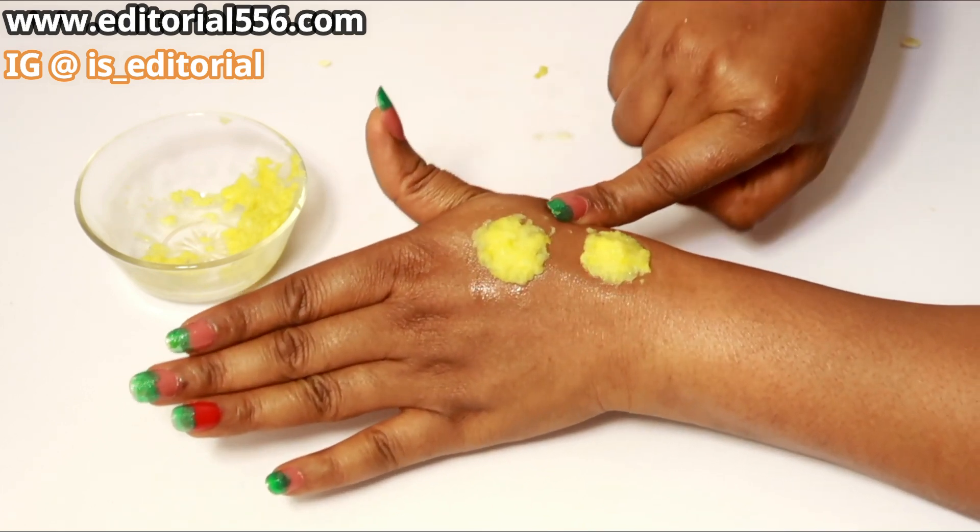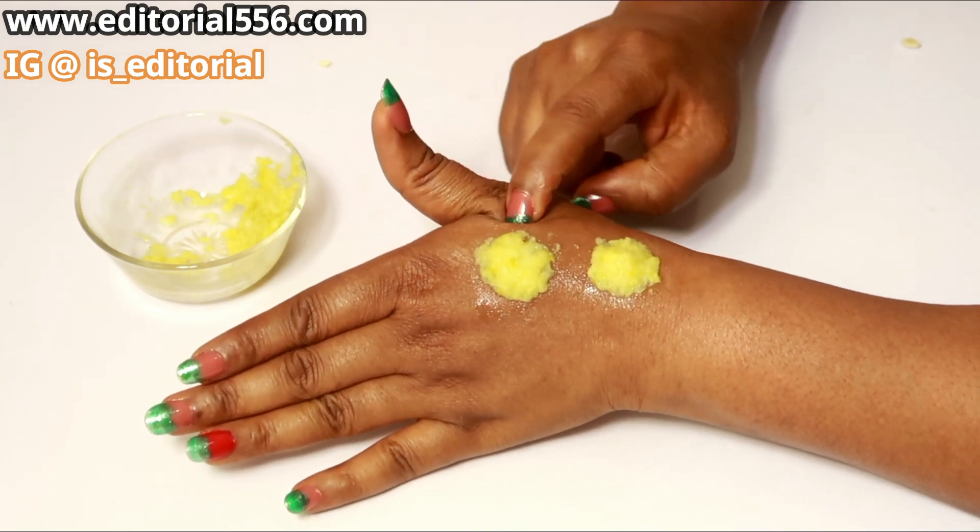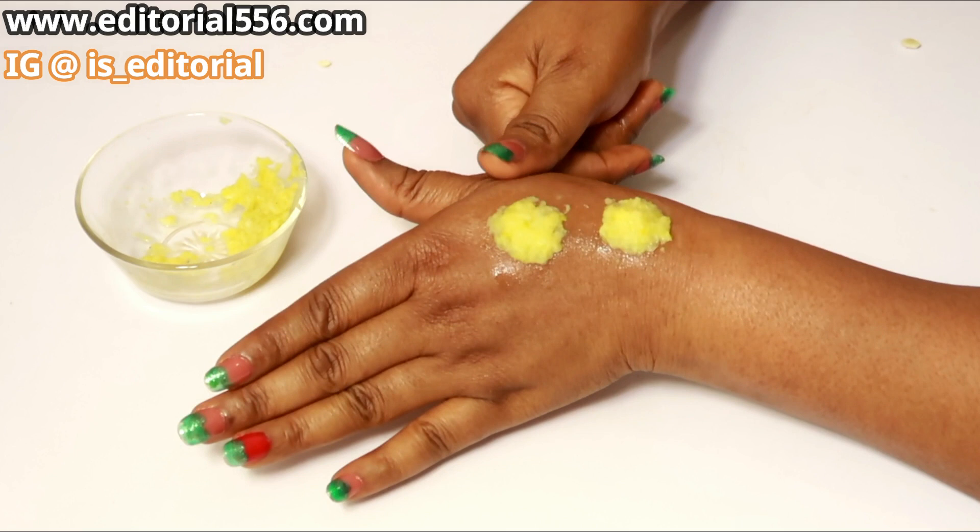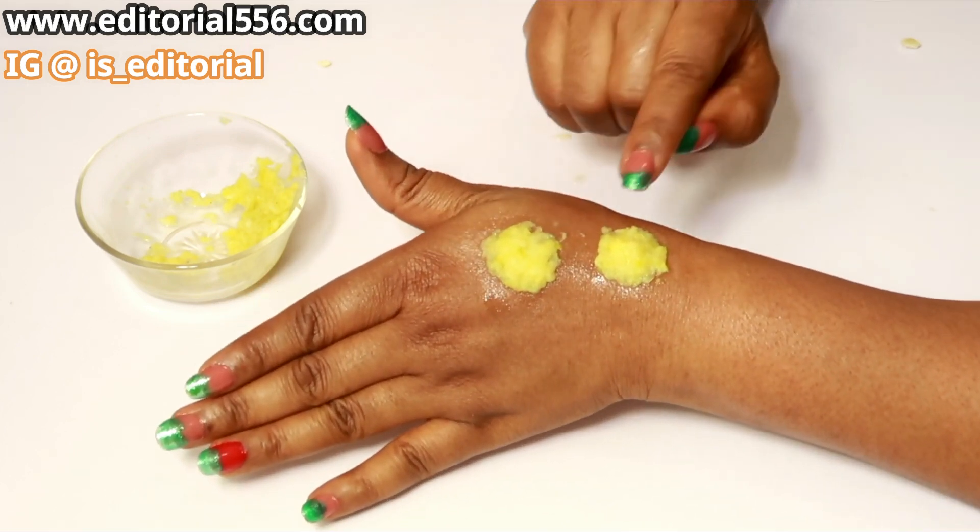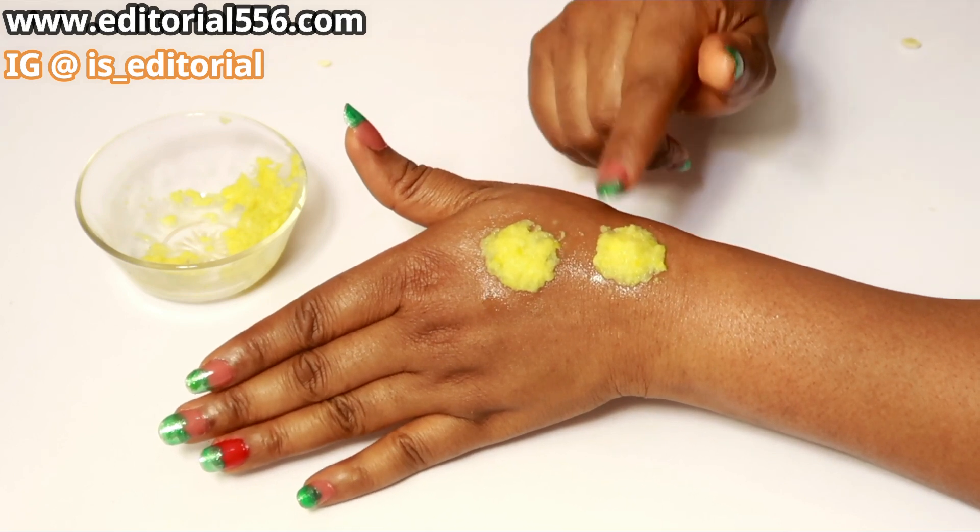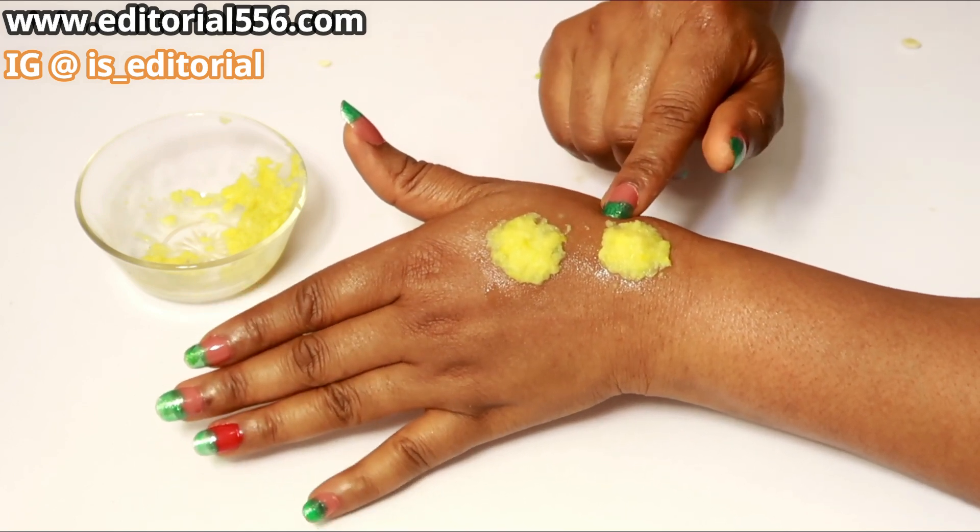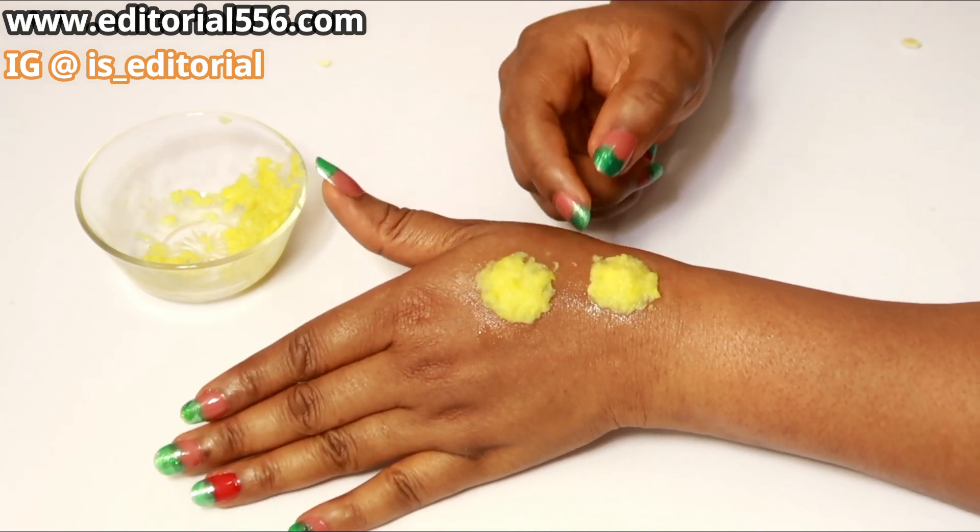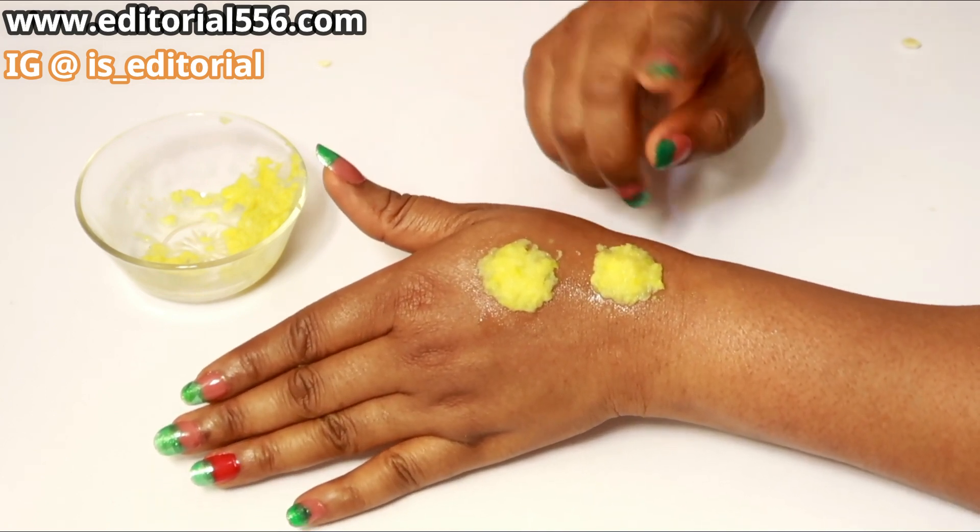So this is what you're going to do. When you place your skin tag remedy over your skin tag, just like this, then you use a plaster and cover it up. Then you leave it there for 24 hours, like till the next day for this to get working. It's going to suck the life out of that skin tag.